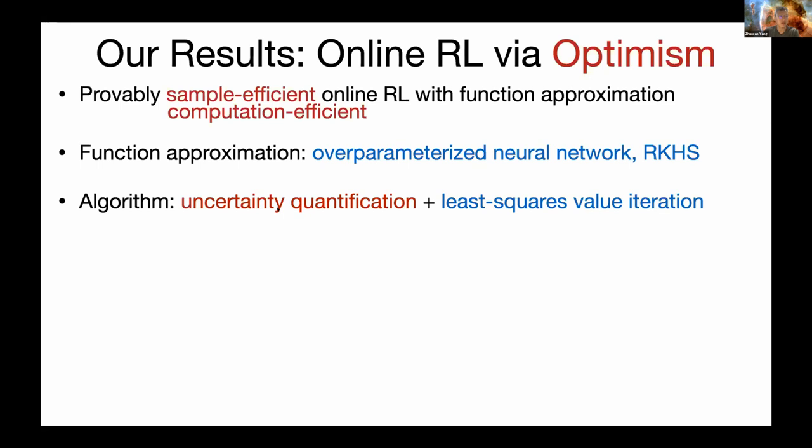Theoretically, this algorithm achieves sample efficiency with a square-root-T regret bound that depends polynomially on problem size, where H is the number of steps per MDP and delta_F quantifies the complexity of the function class. When over-parameterized neural networks are used, this term can be computed using the eigenvalue decay of the neural tangent kernel. The algorithm is also computationally efficient, running in polynomial time. The only assumption is that the regression target lies in the RKHS induced by the neural tangent kernel, with no assumptions on the sampling paradigm. Thank you.